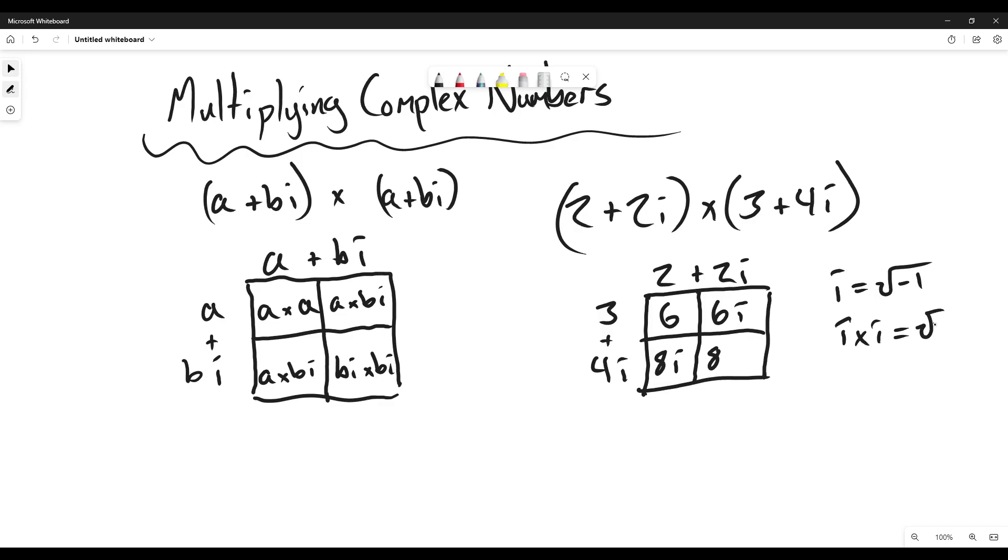So when you do i times i, that equals the square root of negative 1 times the square root of negative 1. And remember when you do the square of a square root you get what's inside it. So i squared equals negative 1. So we have 8 times negative 1, which of course is negative 8.